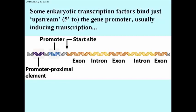Remember that most eukaryotic genes are split — they have exons and introns. Here's a piece of DNA. Alongside a gene, we see the start site of transcription. We see the promoter. This is called the TATA box, along with associated elements.